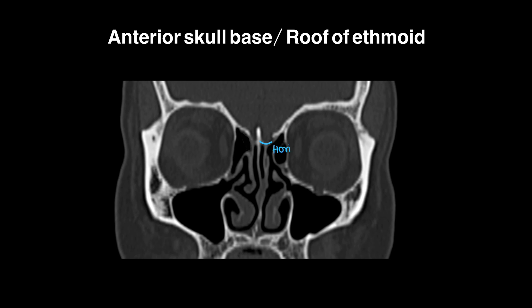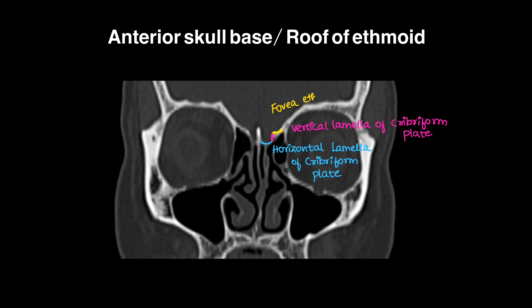The roof of the ethmoid is made up of multiple structures. The olfactory fossa is bordered by the horizontal lamellae of the cribriform plate. The vertical bone here is the vertical lamellae of the cribriform plate. Lateral to it is the fovea ethmoidalis, and this bony projection is the crista galli of the cribriform plate. These are the parts of the cribriform plate forming the roof of the ethmoidal air cells.